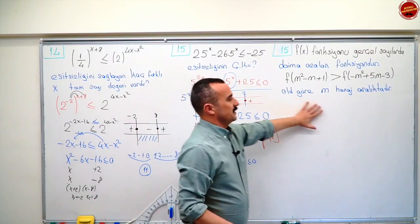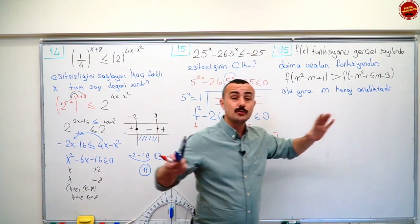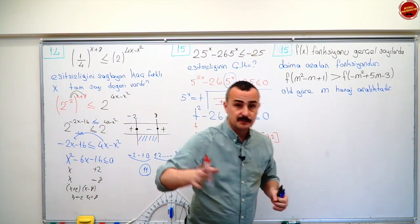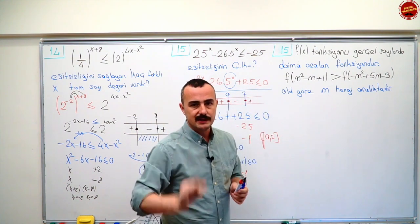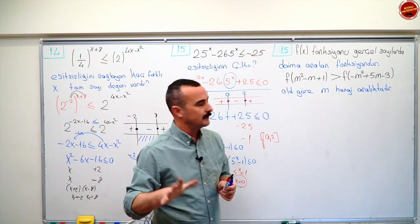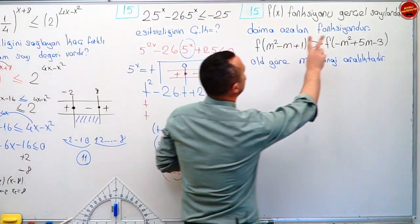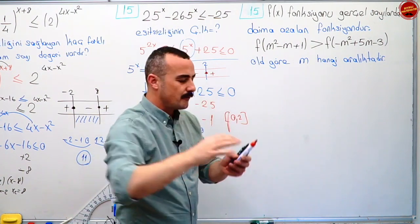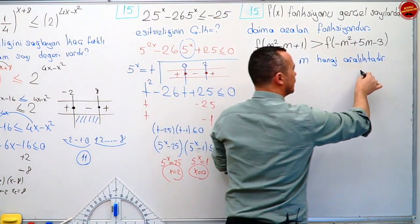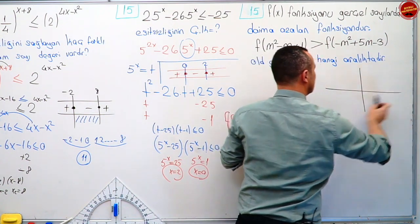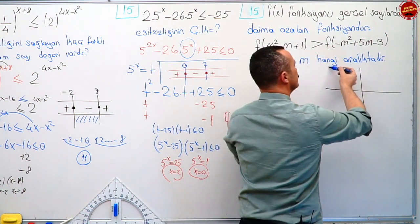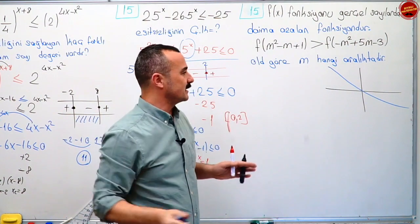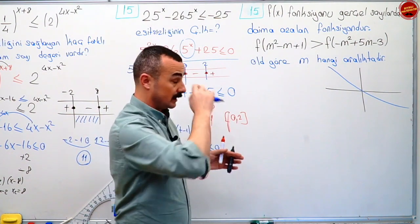Hadi bakalım on altı. Fonksiyonlarla birleştirilmiş, artanlık azalanlıkla birleştirilmiş bir soru. Bu şekilde analiz soruları gelecek karşına, bunları iyi öğren. Fx fonksiyonu gerçel sayılarda daima azalan bir fonksiyondur. Azalan fonksiyon düşün: yokuş aşağı gidiyor. Azalan fonksiyonun özelliği: x değerleri büyüdükçe sonuçlar küçülüyor.